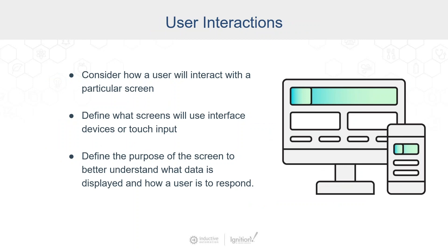When it comes to user interactions, we need to understand how users will interact with our screens. Users will interact depending on whether the input is a mouse, keyboard, or touch interface. We need to know these details because that will help you understand which container type to best use. Consider what interactions your users will have with each screen and establish the overall purpose of each view so users can clearly understand what data is being presented and what actions can be accomplished.